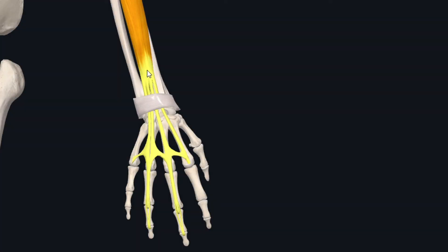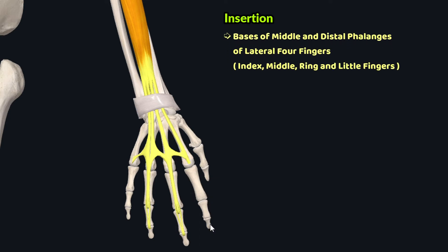At the distal forearm, this muscle belly divides into four tendons, which travel deep to the extensor retinaculum of the wrist through the common tendinous sheath of extensor digitorum and extensor indices muscles. Along the dorsal aspect of the hand, these four tendons insert onto the middle and distal phalanges of the lateral four fingers — the index, middle, ring, and little fingers.